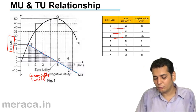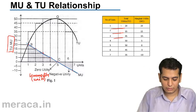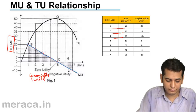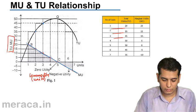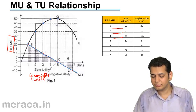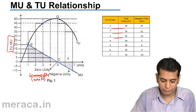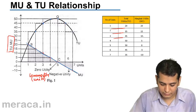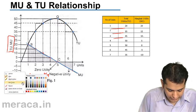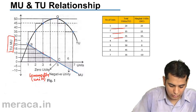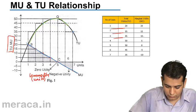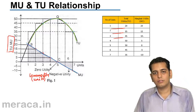Likewise, we will take the coordinates for total utility. That is 1 and 20, 2 and 35, 3 and 45, 4 and 50, 5 and 50 again, 6 and 45, and 7 and 35. And if we join all these points, we get a curve and this curve will be known as the total utility curve.